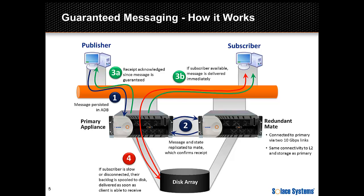It's also worth noting that there is component redundancy in the appliance hardware. This means that the active appliance can tolerate and recover from many component failures without resorting to an HA failover to the backup appliance, or without any impact to the application at all. Components like a hard drive, a power supply, a fan, or one or more ethernet ports can fail without any service impact — just notifications to the management system.